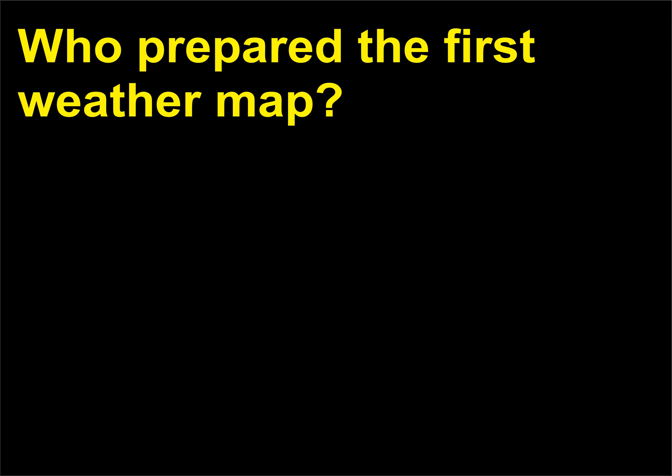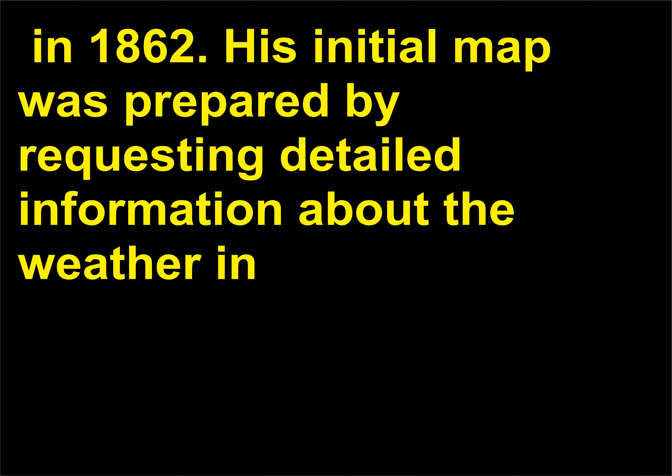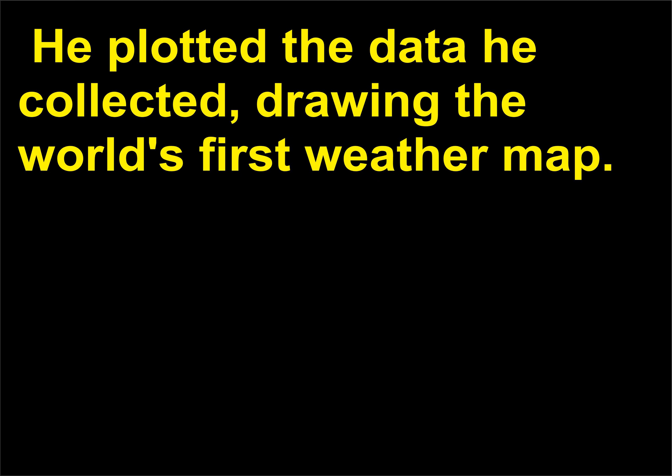Who prepared the first weather map? The first weather map was prepared by Francis Galton (1822–1911). In 1862, his initial map was prepared by requesting detailed information about the weather in December 1861 from weather stations throughout the British Isles. He plotted the data he collected, drawing the world's first weather map.